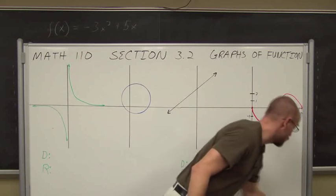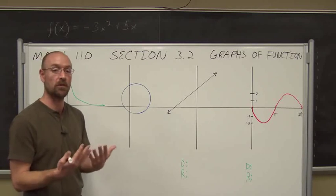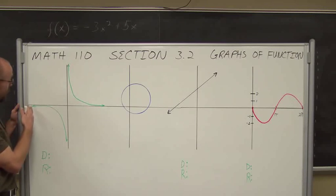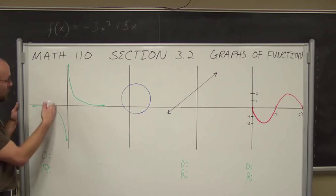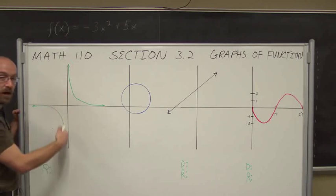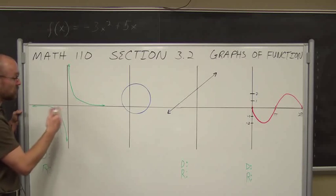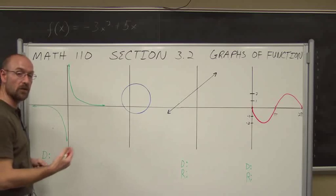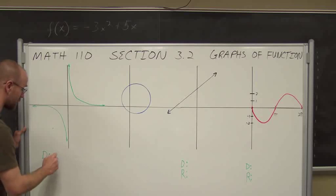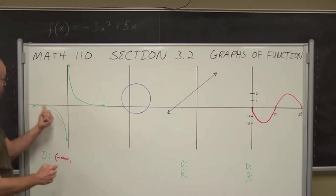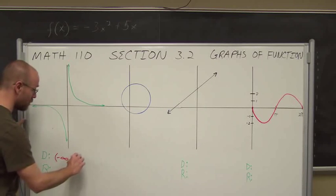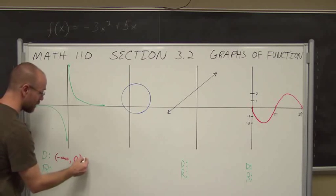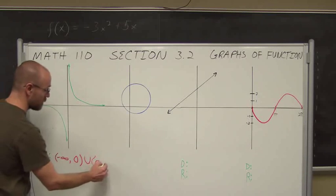Now, what if we're asked to find the domain and range of a function? Recall that domain is the possible input values of x. If we look at this function, on the negative side the graph continues to negative infinity. It has values of x up until we get to the y-axis, but it doesn't cross it — there is no y-intercept, which means x is not equal to 0. As we move to the right, we have values of x continuing. So the domain in interval notation, since the only excluded value is x equals 0, goes from negative infinity up to 0, not including 0.